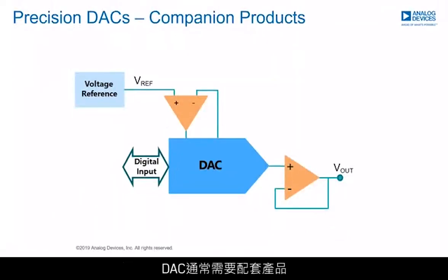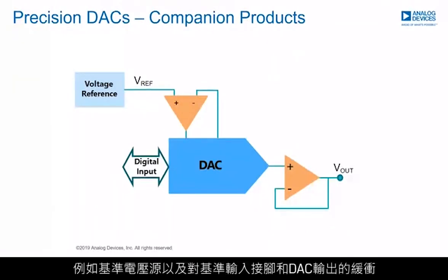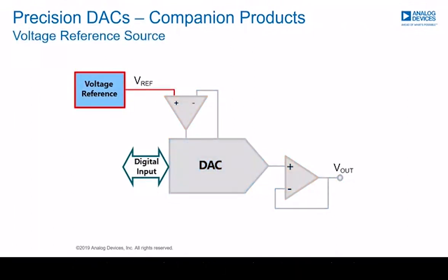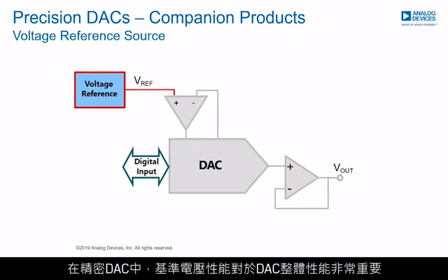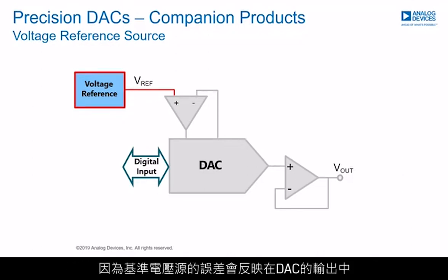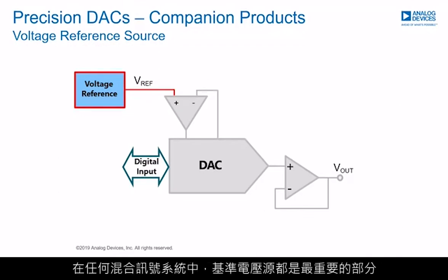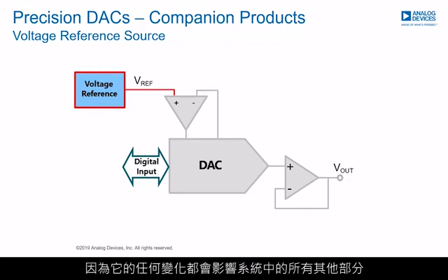DACs usually require companion products such as a voltage reference and buffering of both the reference input pin and the DAC output. In precision DACs, the voltage reference performance is key to overall DAC performance, as errors from the reference source will be reflected in the DAC output. The reference is the most important point in any mixed-signal system, as any variation in it will affect all other points in the system.